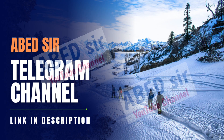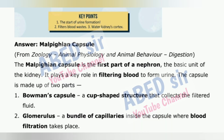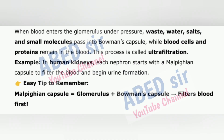Next Important Short Question 4: Malpighian Capsule. The Malpighian capsule is the first part of a nephron, the basic unit of the kidney. It plays a key role in filtering blood to form urine. The capsule is made up of two parts: 1. Bowman's capsule — a cup-shaped structure that collects the filtered fluid. 2. Glomerulus — a bundle of capillaries inside the capsule where blood filtration takes place. When blood enters the glomerulus under pressure, waste, water, salts, and small molecules pass into Bowman's capsule, while blood cells and proteins remain in the blood. This process is called ultrafiltration.